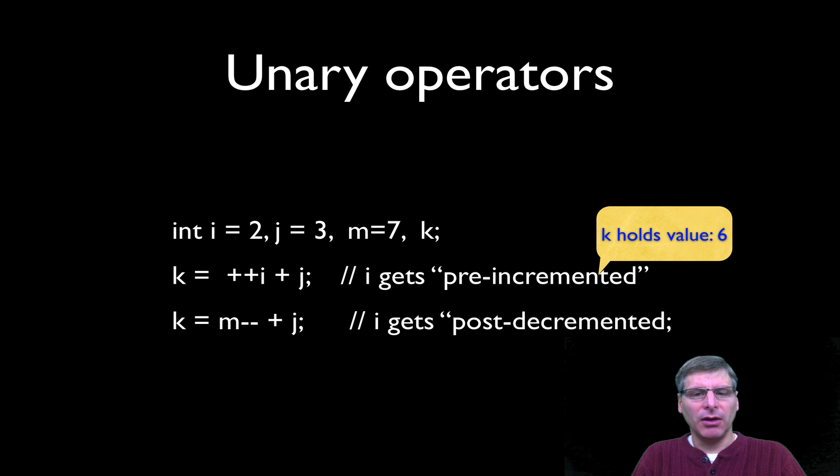In the second example, I have what's called a post decrement. The minus minus appears after the variable m. So what's going to happen here is the addition is going to happen first. So n plus j, or 3 plus 7, giving us 10. And afterwards, we do the decrement. So m will have 6 after this expression is evaluated, but the value of k will be 10.